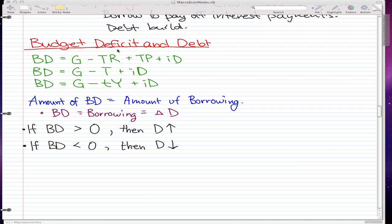This focuses on budget deficit and debt. I have these three formulas that we went through in the last video. We can condense this formula to the smaller formula: G minus T plus iD. And we can expand that formula to G minus little t times Y plus iD.